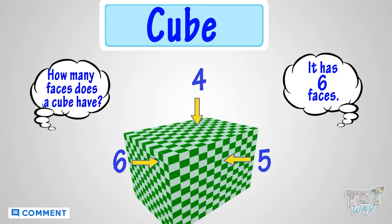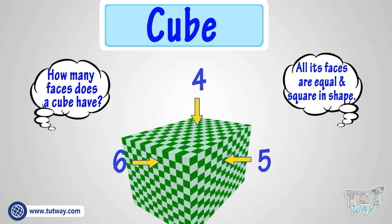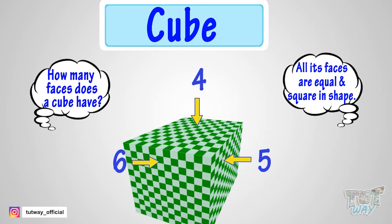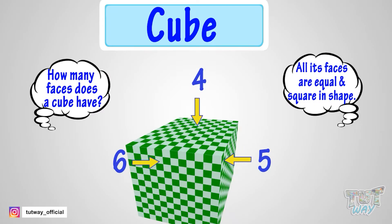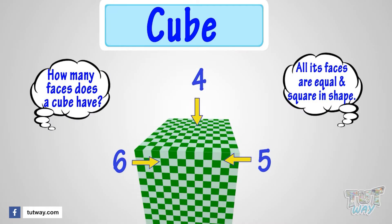Also, all faces of a dice are equal and square in shape. So now, we know that a cube has 6 faces, which are all equal and square in shape.